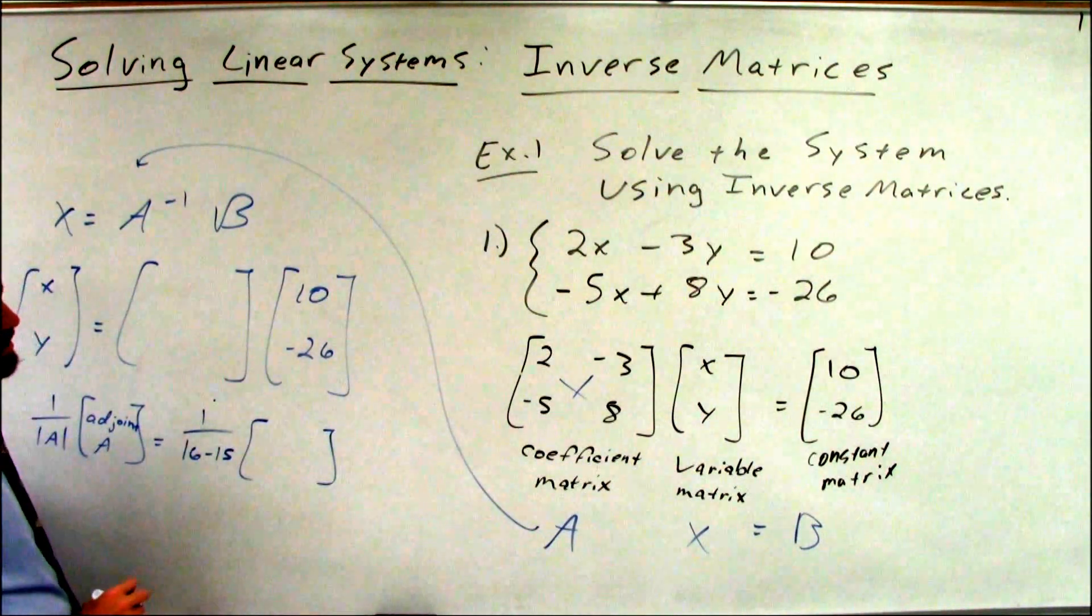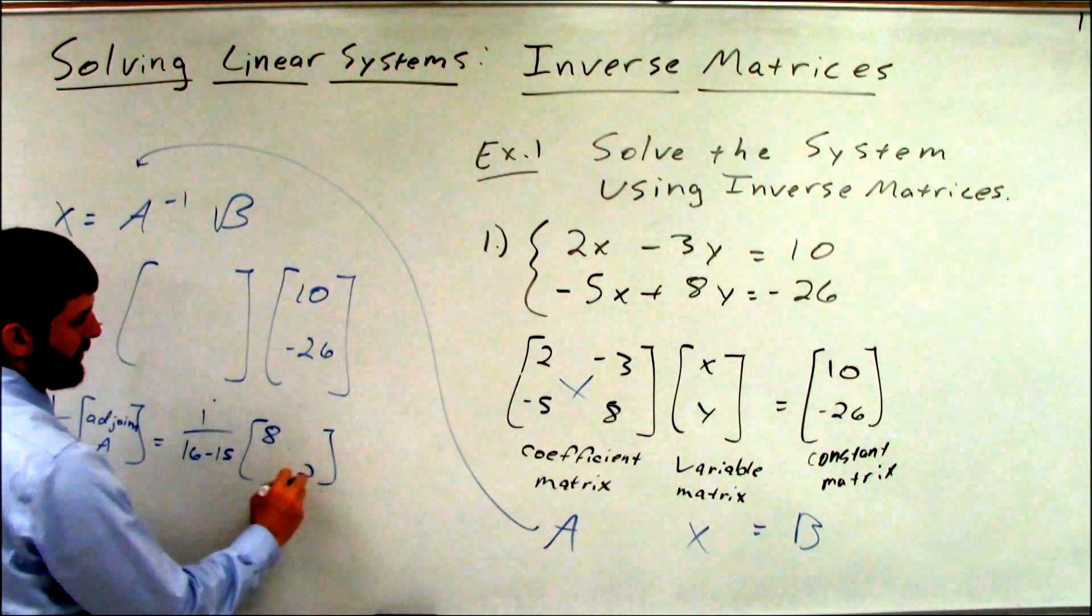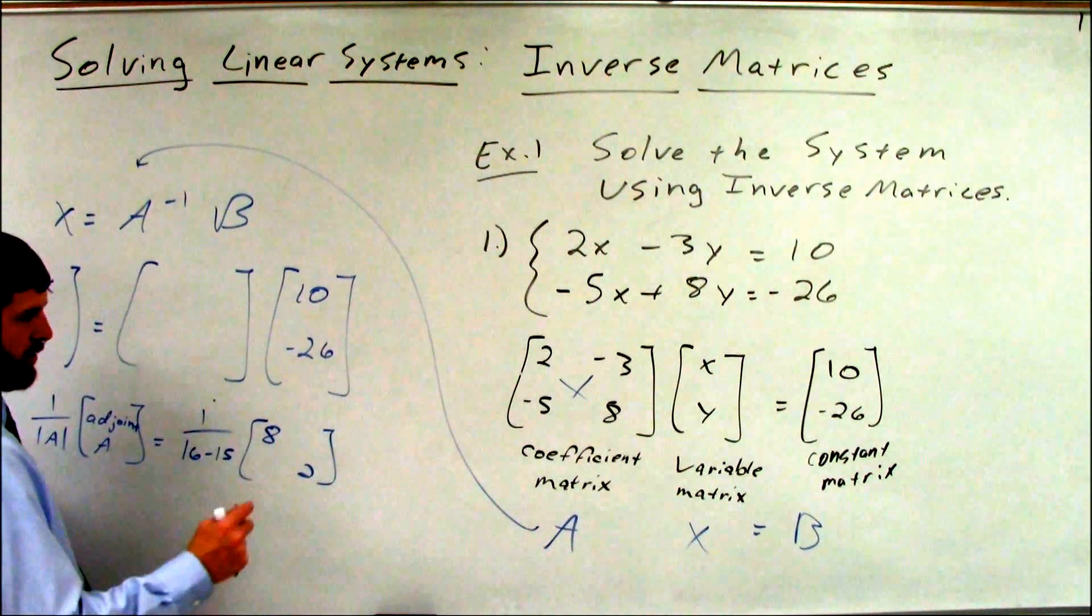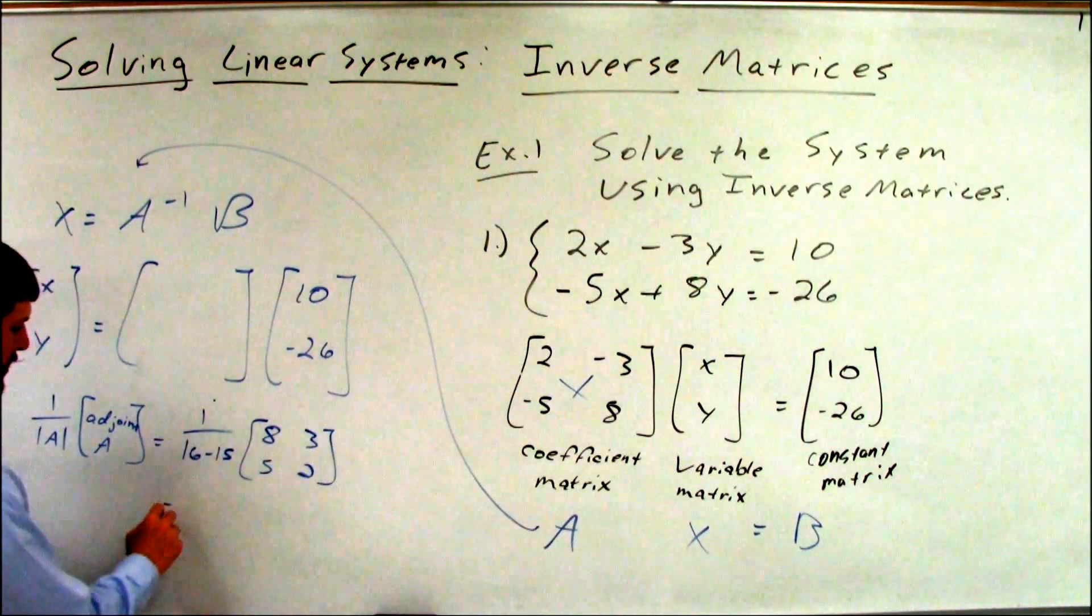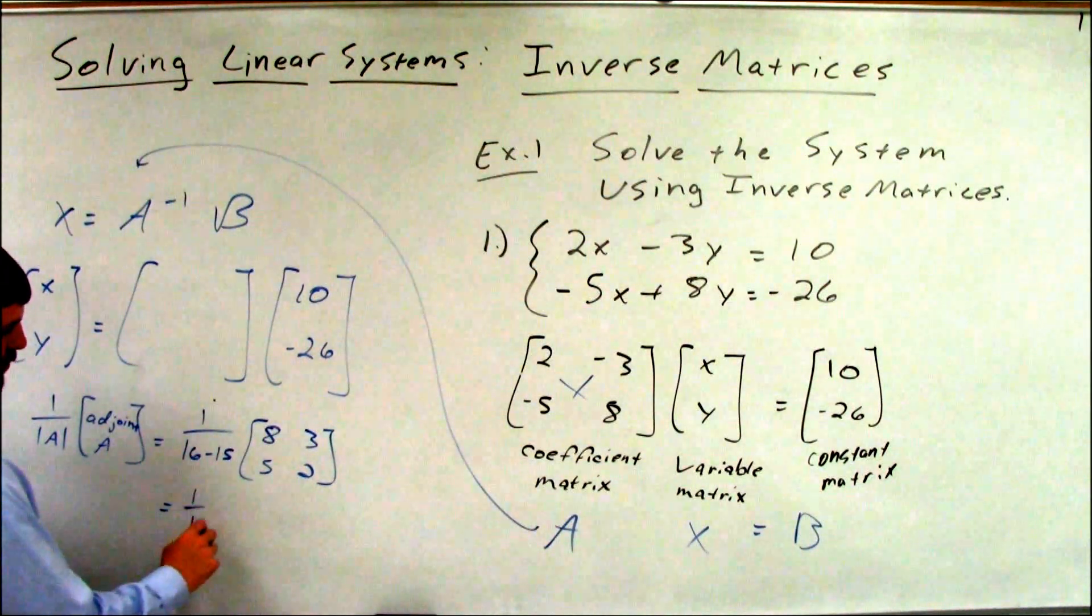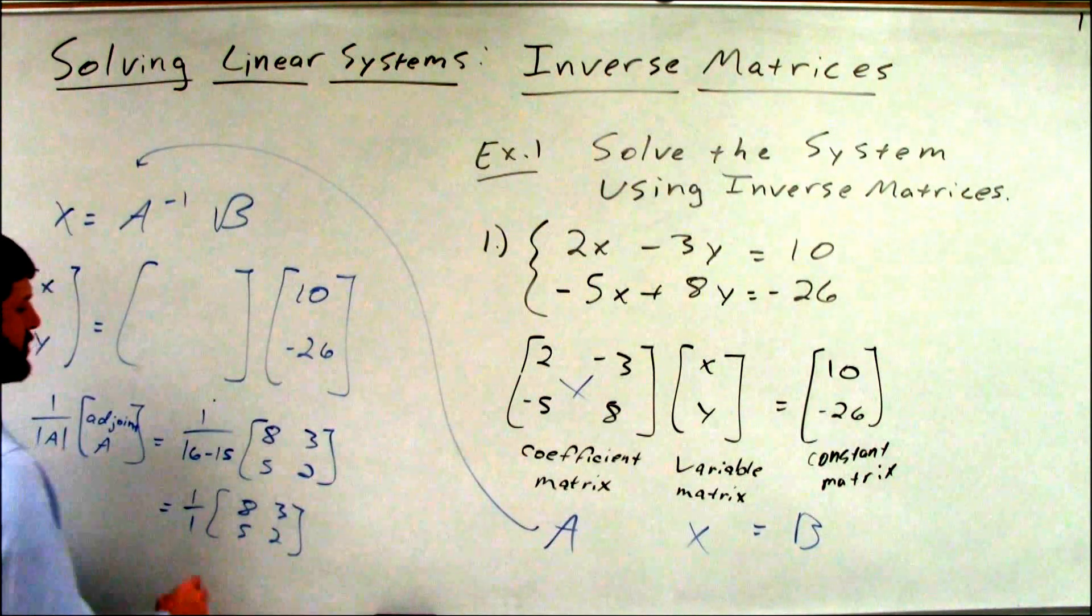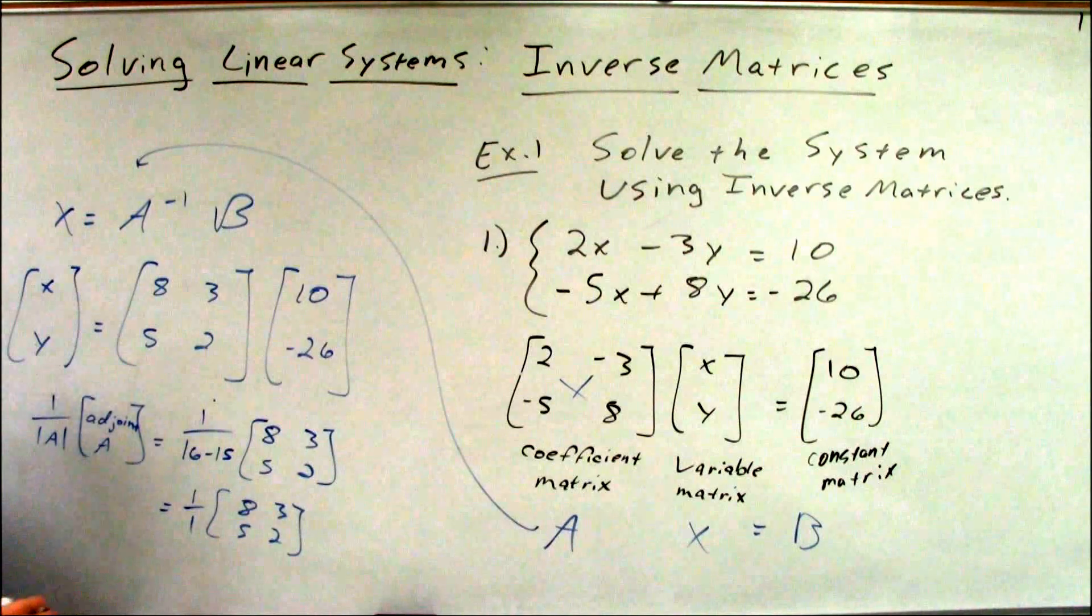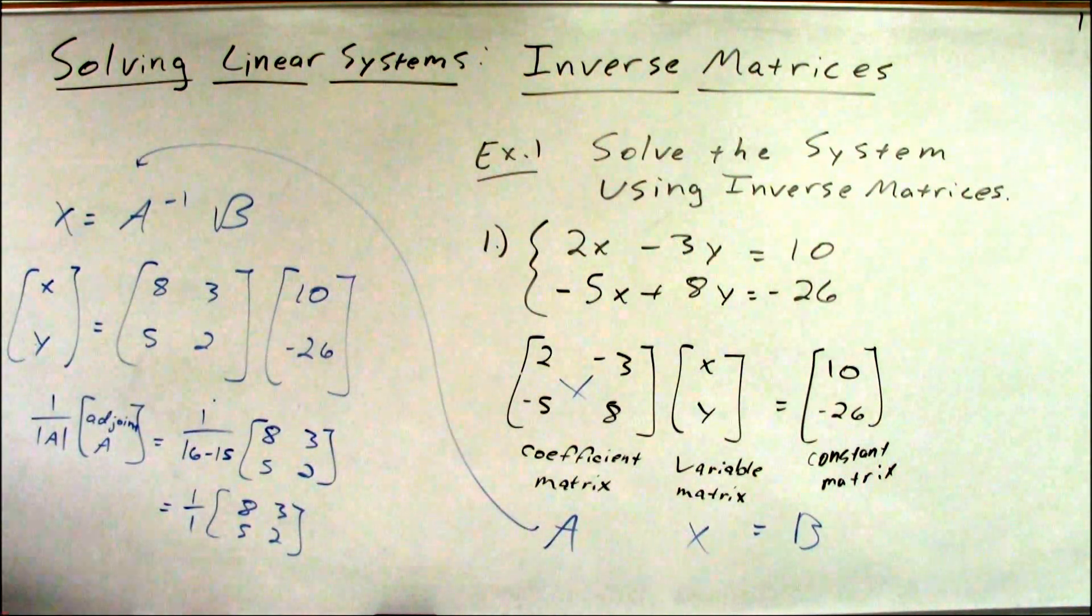Our adjoint is going to be swap the diagonals, or swap the entries of the main diagonal, change the signs on the other diagonal, the right-hand diagonal. Positive 3, positive 5. So 16 minus 15 is 1. 8 and 5, 3 and 2. So that's going to be our inverse. So we start by calculating the inverse of the coefficient matrix.